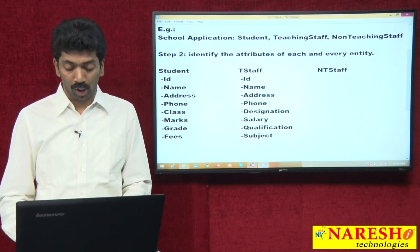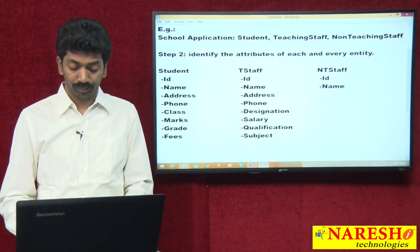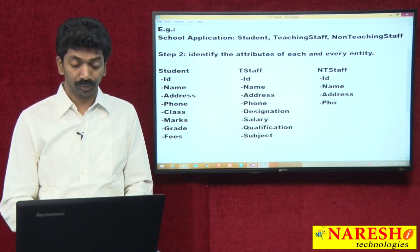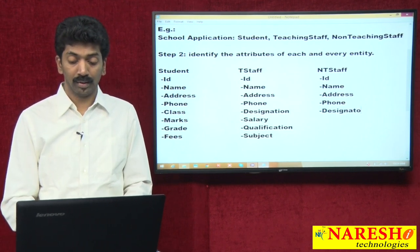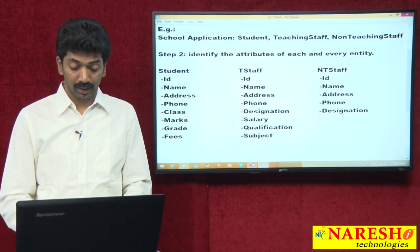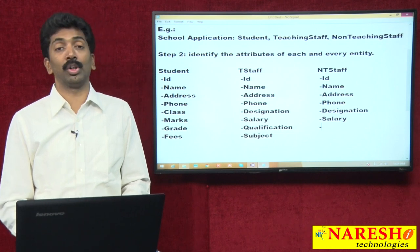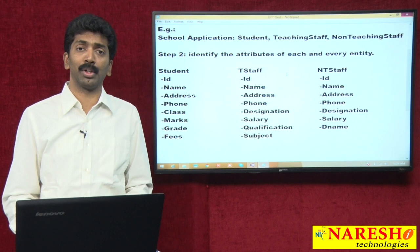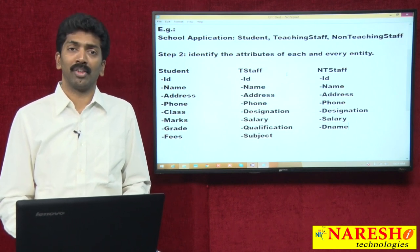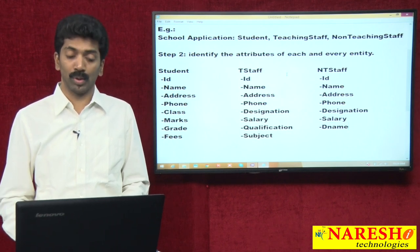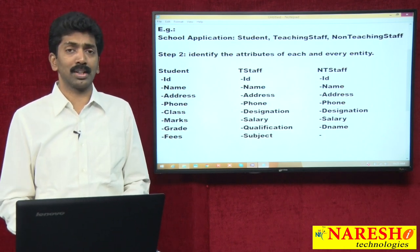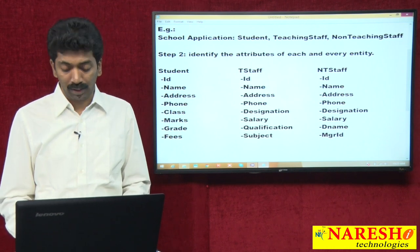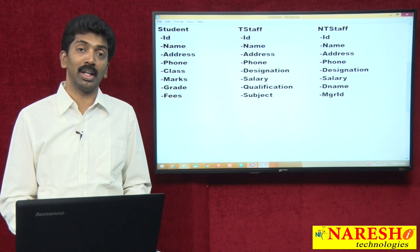Now let us come to non-teaching staff. Non-teaching staff also has some attributes: ID, name, address, phone, designation, and salary. For non-teaching staff there is no need to know about qualification. Instead, we want the name of the department the person works for — since in a school there will be accounts, marketing, and finance departments. We also want to maintain the reporting manager information, which is the MGR ID. These are the attributes identified for each and every entity.